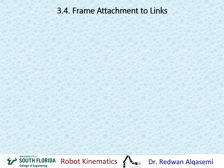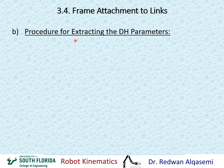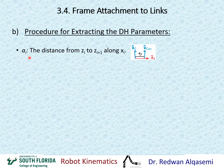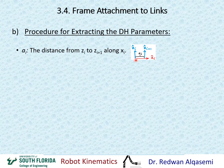Once we assign frames and attach them to each link, including the ground and gripper, we are ready to extract the DH parameters. The first parameter is A_i, the link length of link I, which is the distance from z_i to z_{i+1} along x_i. This graph shows z_i and z_{i+1}, and x_i is the common perpendicular between them. That distance between z_i and z_{i+1} along x_i is A_i.